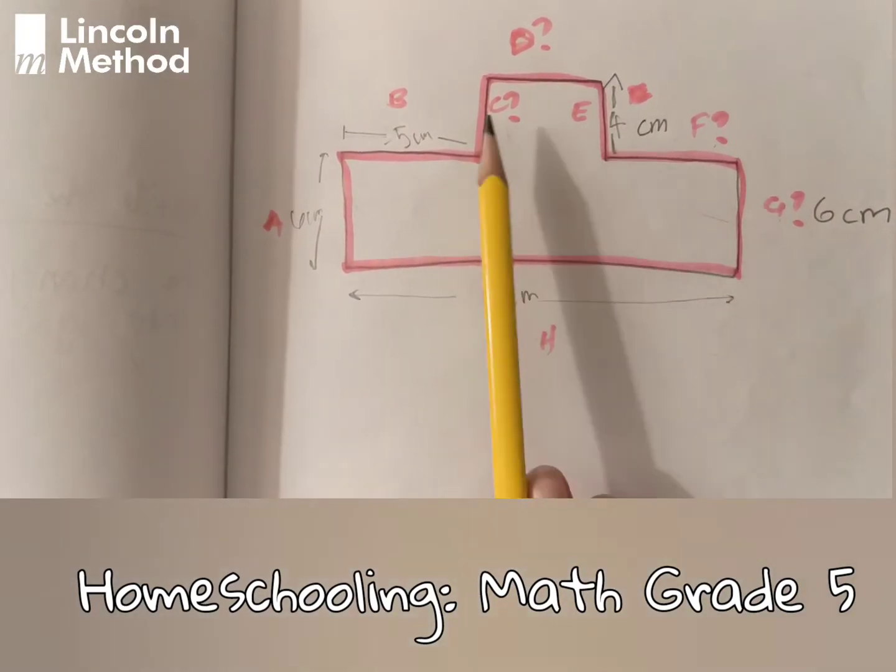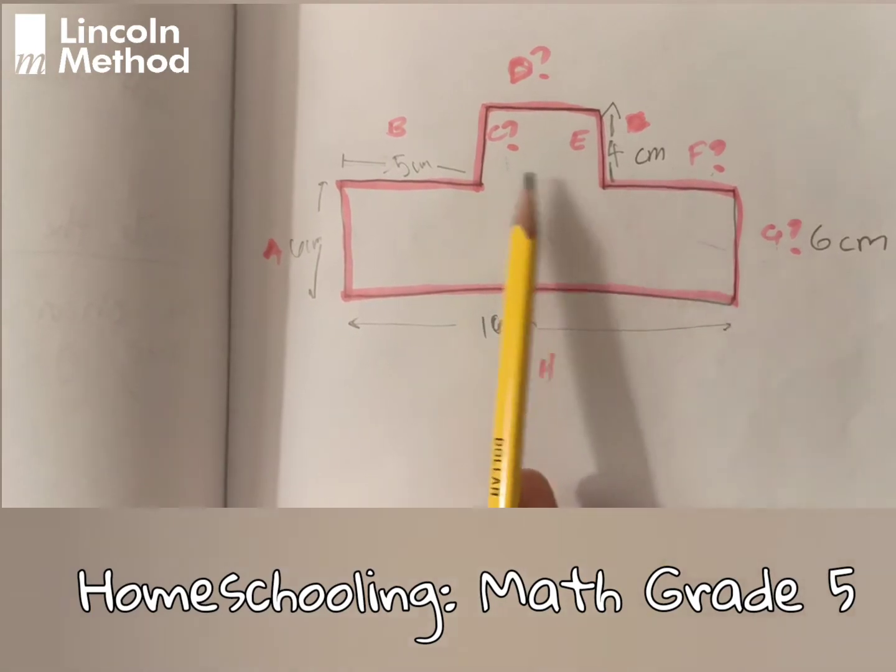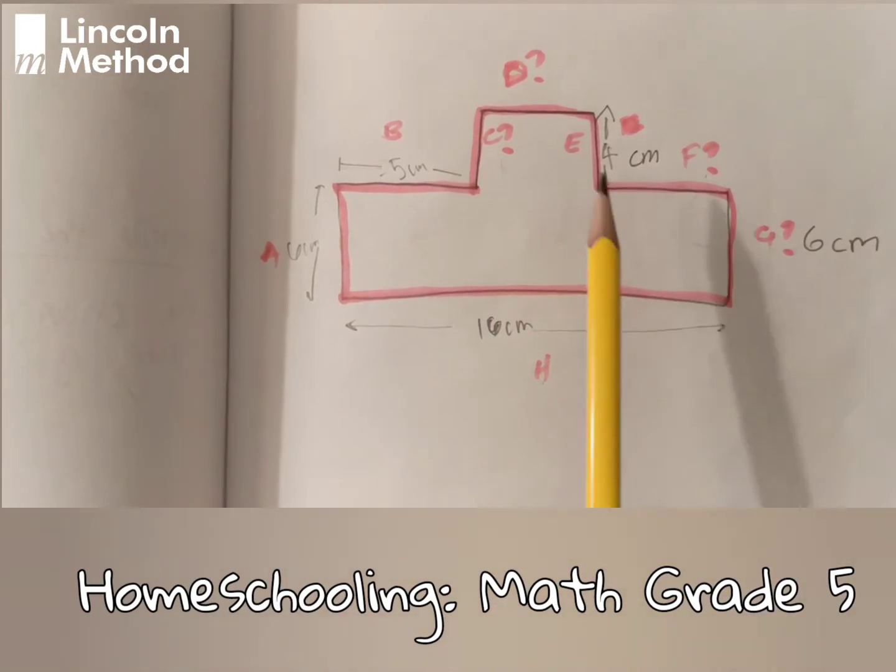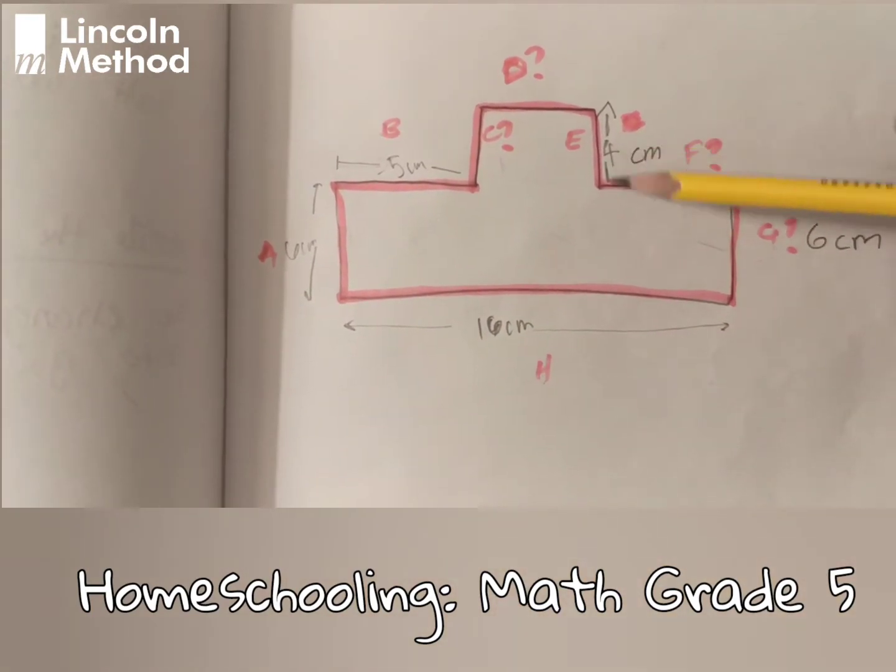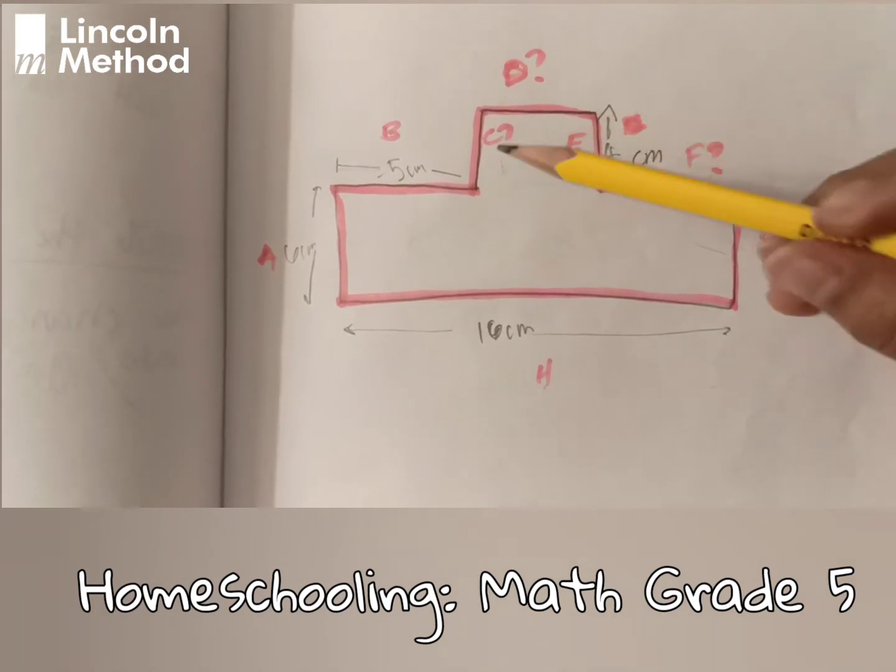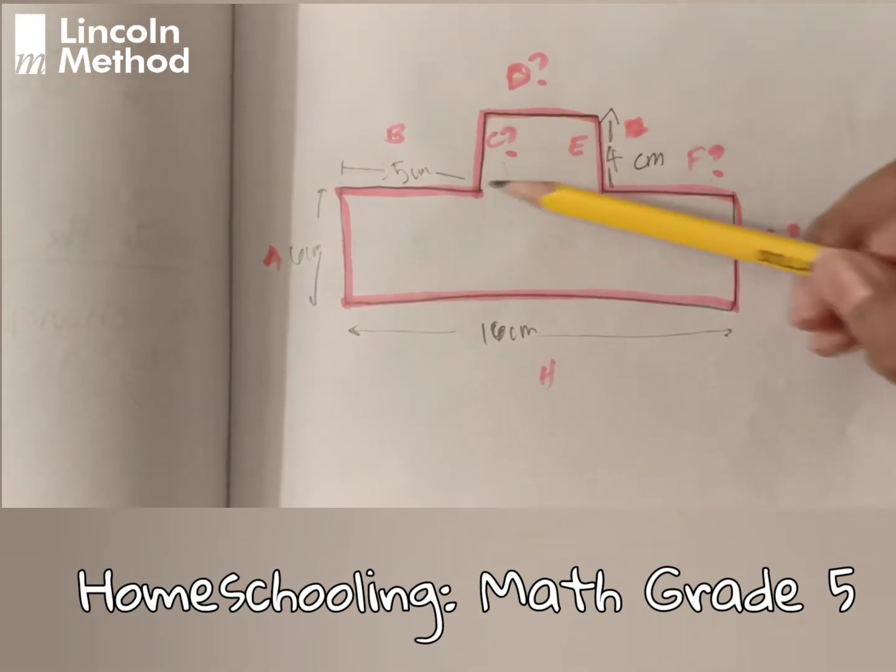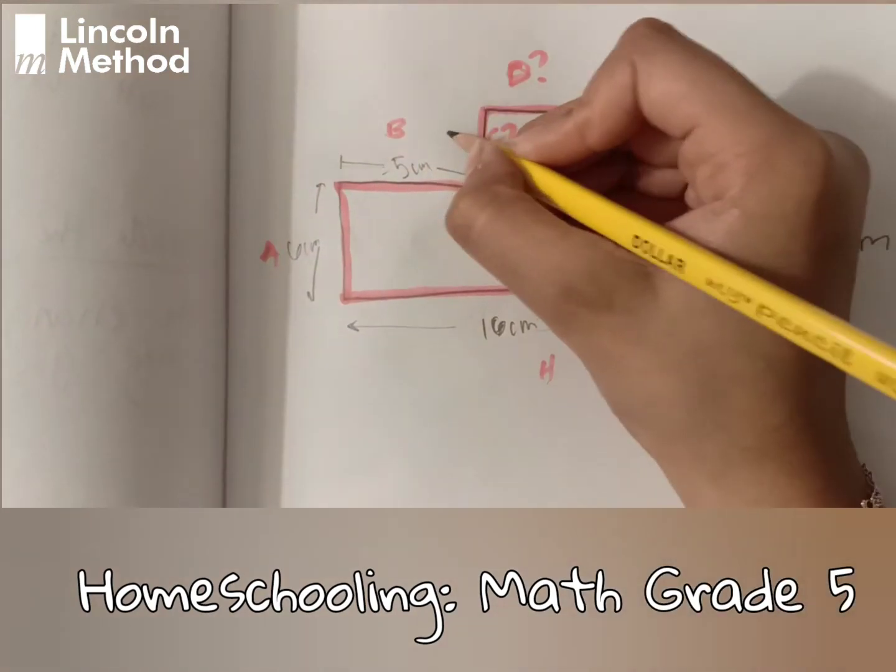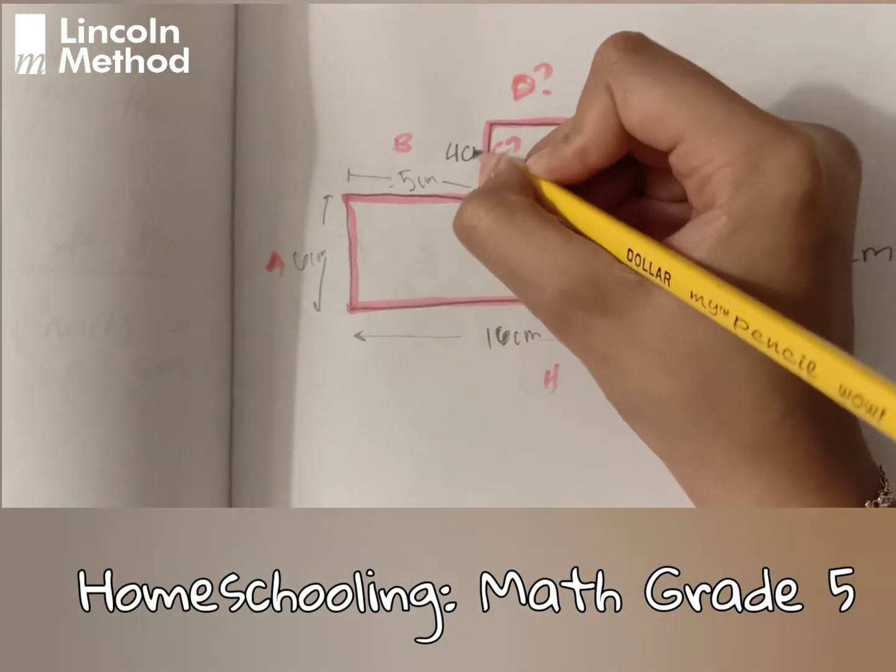Now we're going to solve C. C is also pretty easy. As we know, E is 4 cm and C has the same height, so C will also be 4 cm because they both have the same height.